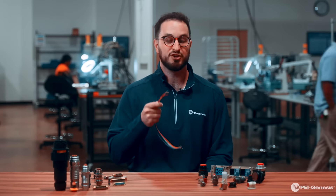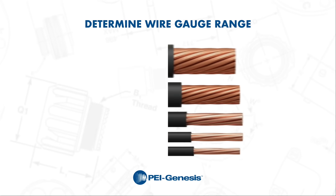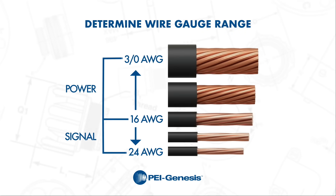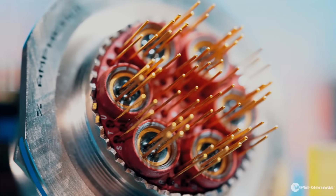First, we need to determine wire gauge range. The wire gauge will relate to the size of the contacts, and the size of the contacts will help us determine which connector series we can use for your application. Typically a contact 16 AWG or larger is associated with transmitting power, while a contact smaller than 16 AWG is associated with transmitting signal. Knowing your wire gauge or contact size ensures that your connector can handle the electrical load without failure or overheating.